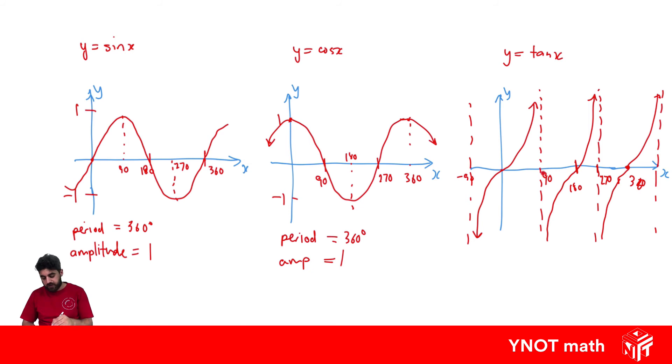Because the graph repeats itself every 180 degrees, that's its period. So its period is 180 degrees. Different from sine and cos, there is no amplitude because it goes up forever and down forever. There's no amplitude for a tan graph.